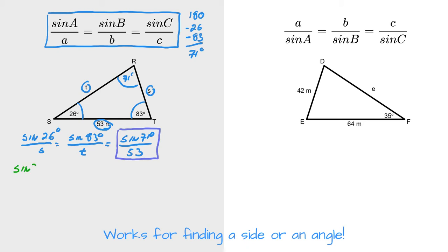So sine 71 compared to 53 is the same ratio as sine 26 compared to S. Cross multiply to solve. So 53 sine 26 degrees all over sine 71. And you will get S to be approximately 25. If you're clever with your calculator, you can do that full calculation in one step. Otherwise, please use your ratios to four decimal places and write them down individually and then carefully multiply and divide through.